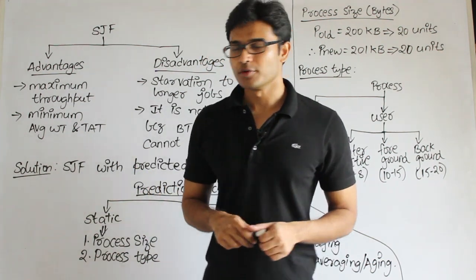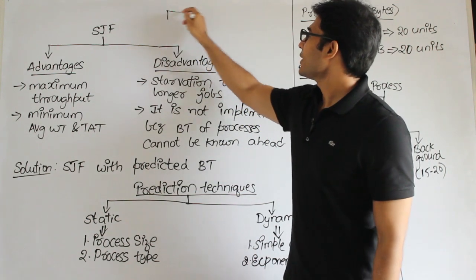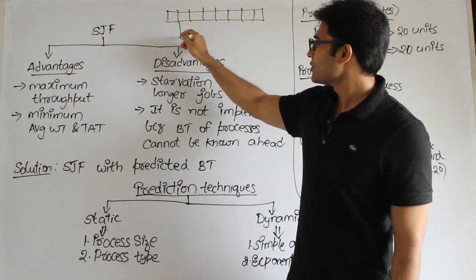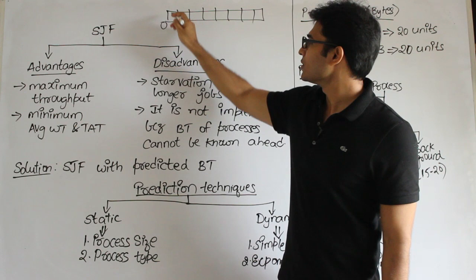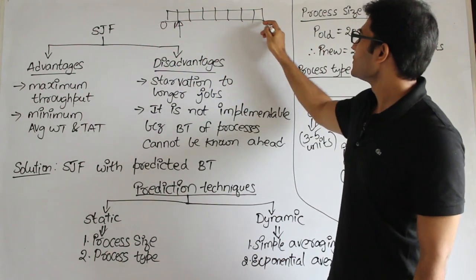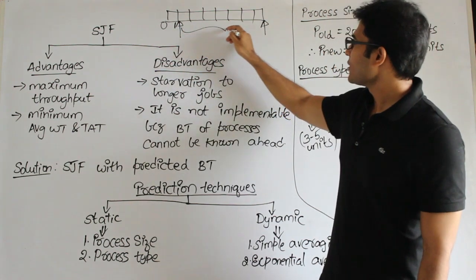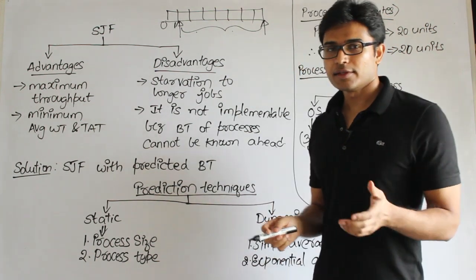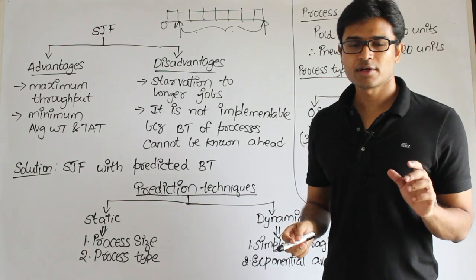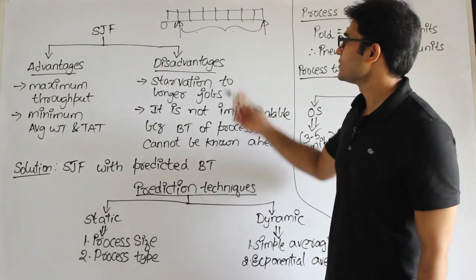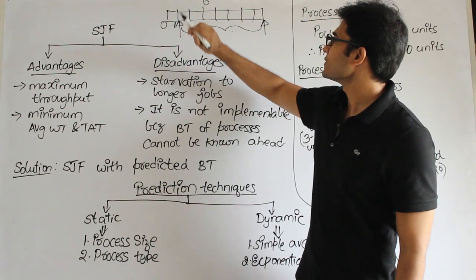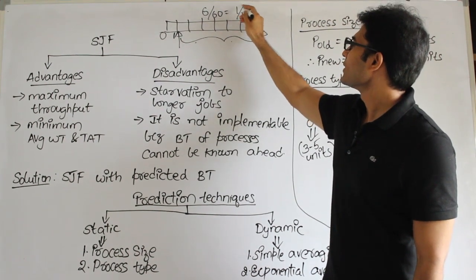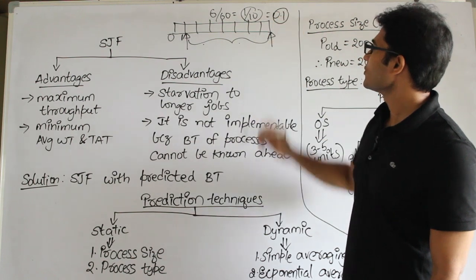That count is the throughput. For example, the schedule is the Gantt chart — say you started the first process at time 1 and finished the last one at some point. That entire span is the length of the schedule. The throughput is the number of processes per unit time. If you completed 6 processes in 60 units of time, the throughput is 0.1 processes per second.